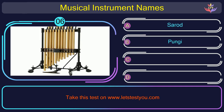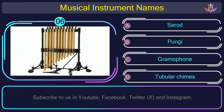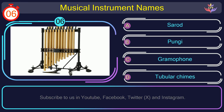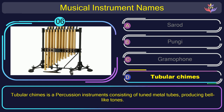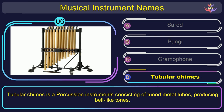Question number 6. Can you name the musical instrument you see in this picture? The correct answer is option D: Tubular chimes. Tubular chimes is a percussion instrument consisting of tuned metal tubes, producing bell-like tones.